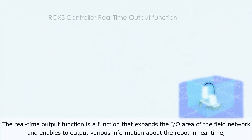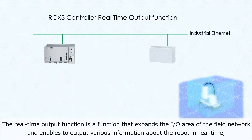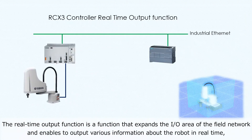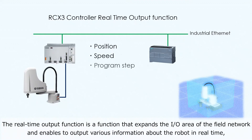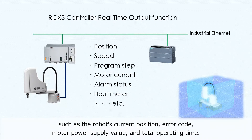The real-time output function expands the input and output area of the field network and enables outputting various information about the robot in real-time, such as the robot's current position, error code, motor power supply value, and total operating time.